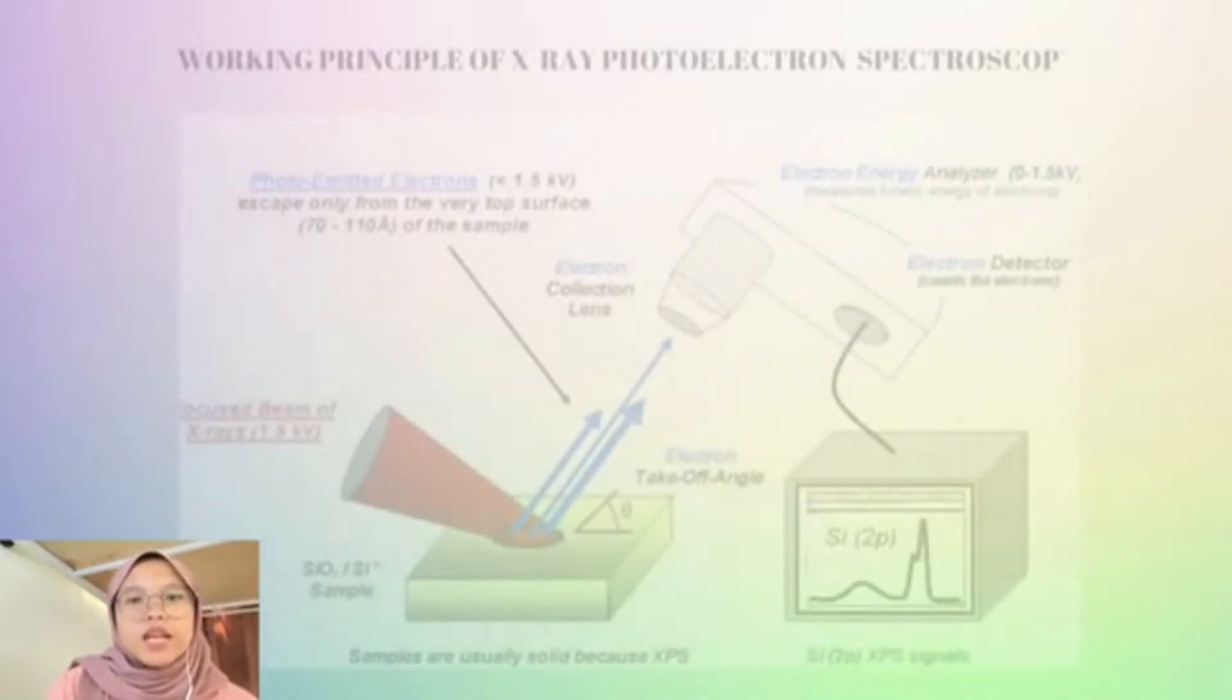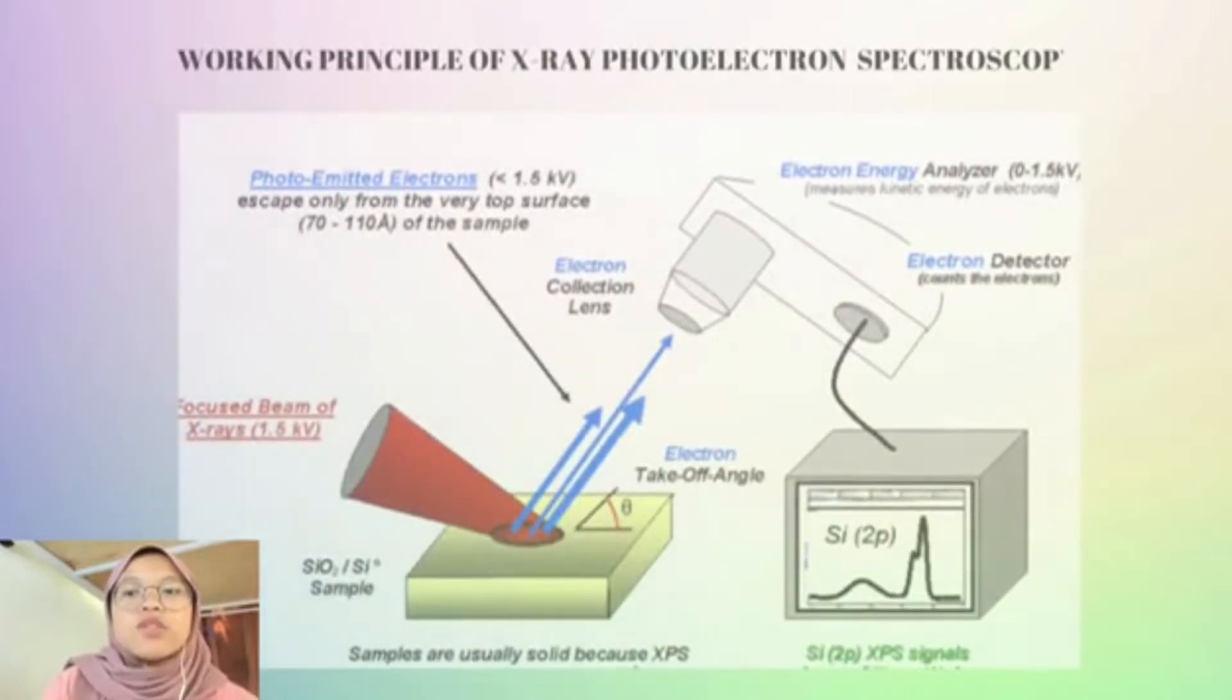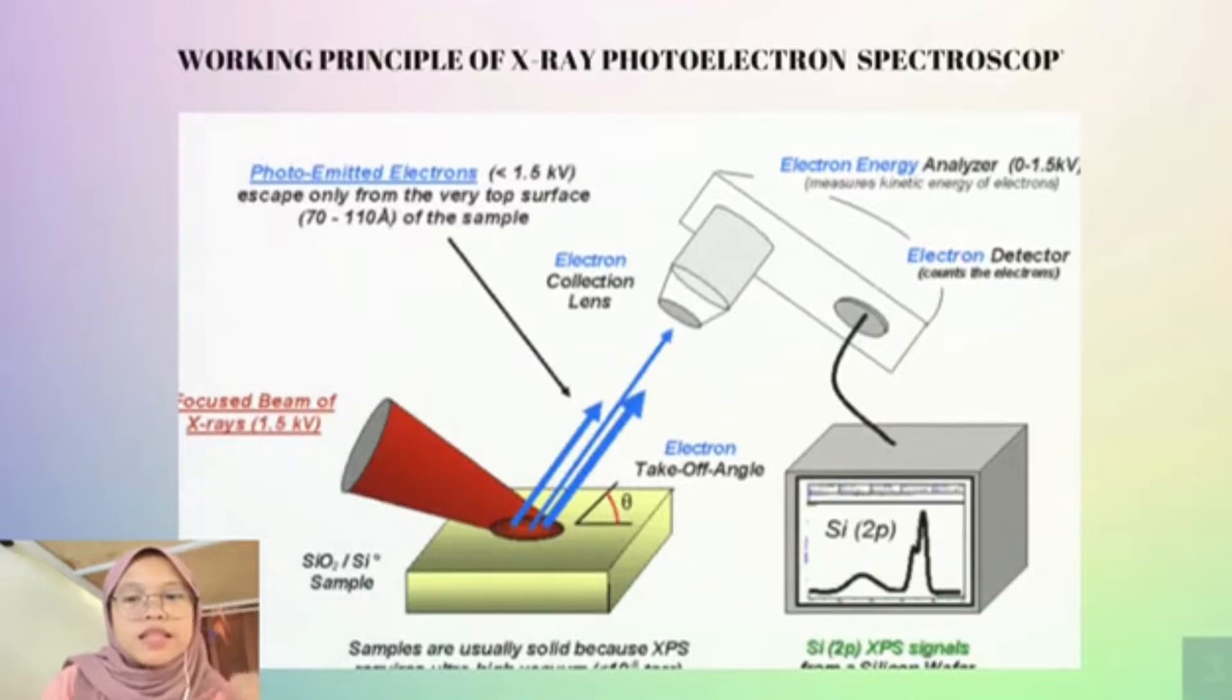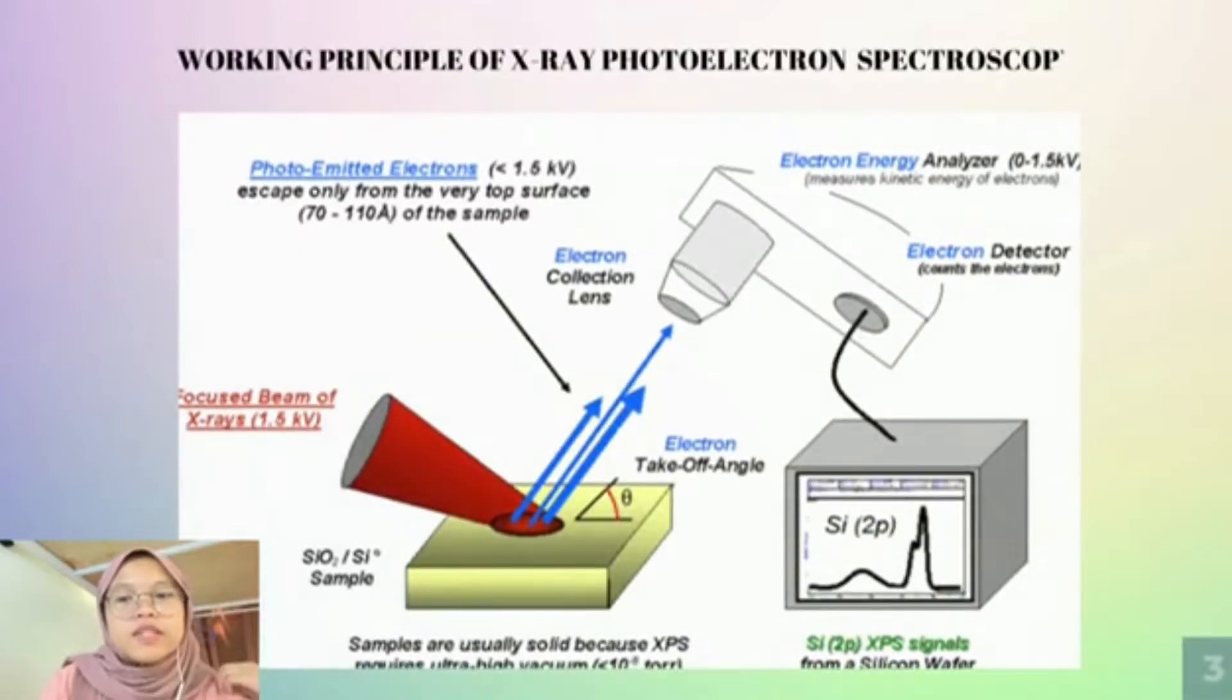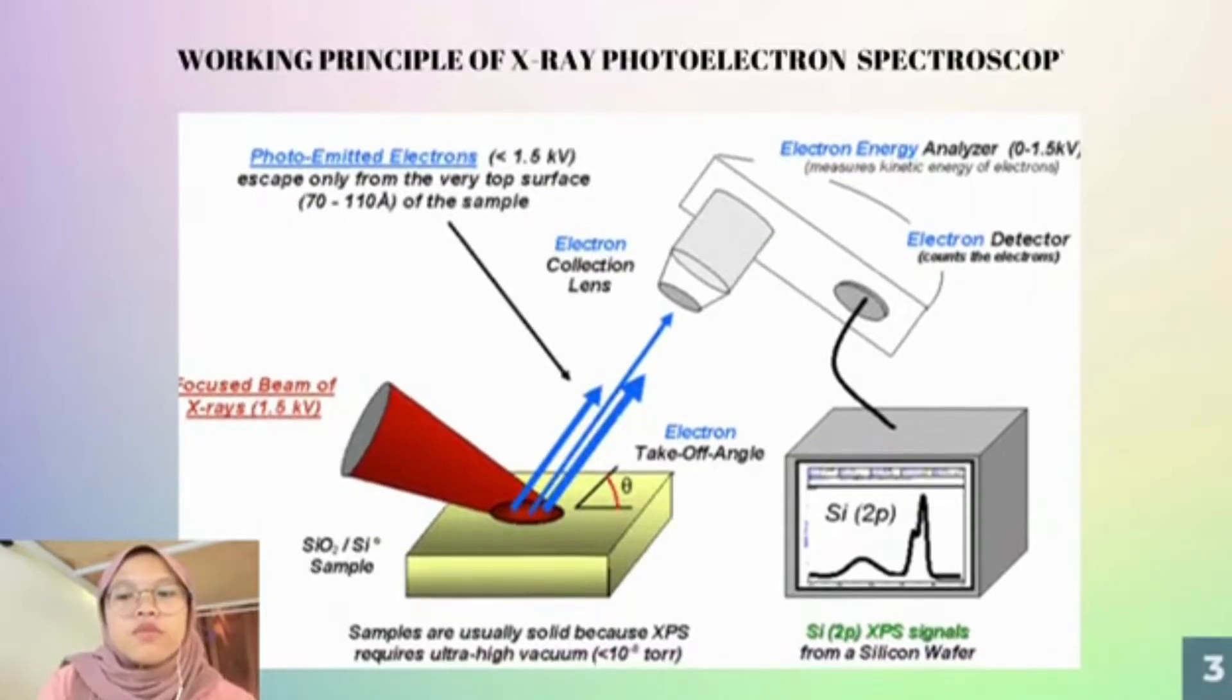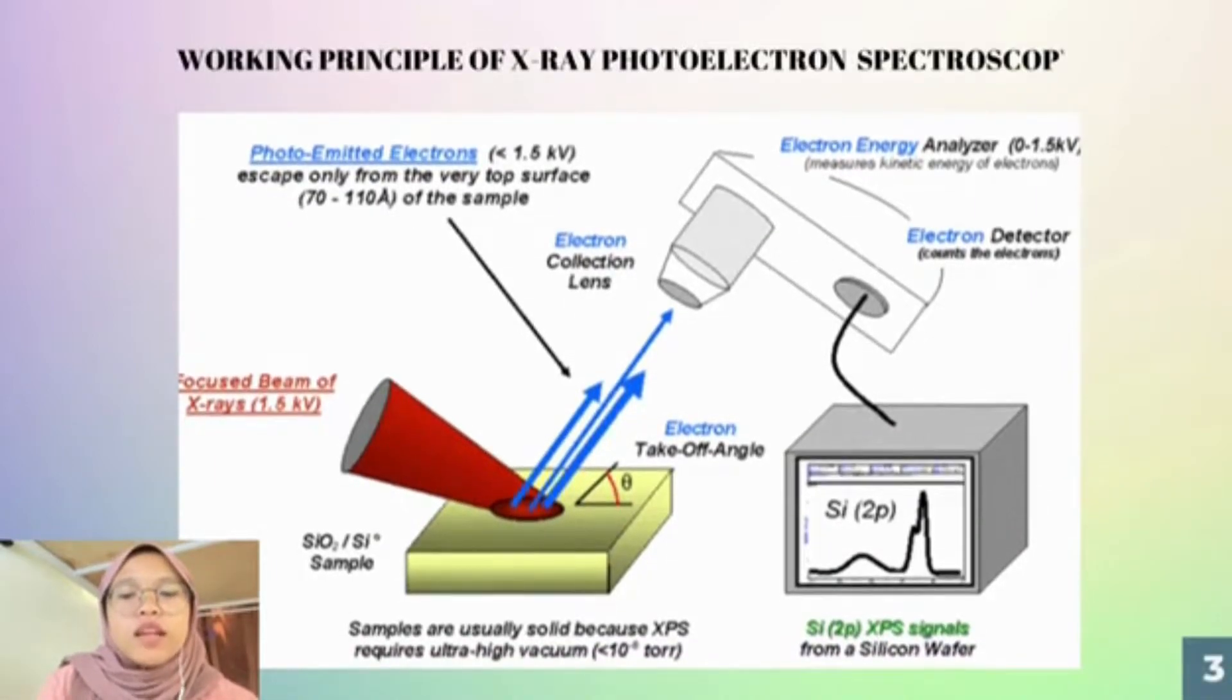We will move to the second one which is UPS. It stands for Ultraviolet Photo Electron Spectroscopy. It operates on the same principle as XPS. The only difference being that ionizing radiation at energies of tens of electron volts are used to induce the photoelectric effect, as opposed to photons of greater than 1 kilo electron volt that are used in XPS.